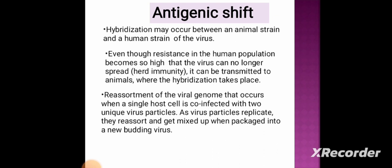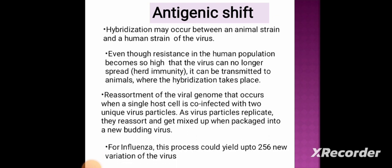Re-assortment of the viral genome occurs when a single host cell is co-infected with two unique virus particles. As the virus particles replicate, they re-assort and get mixed up when packaged into new budding viruses. For influenza, this process could yield up to 256 new variations of the virus.